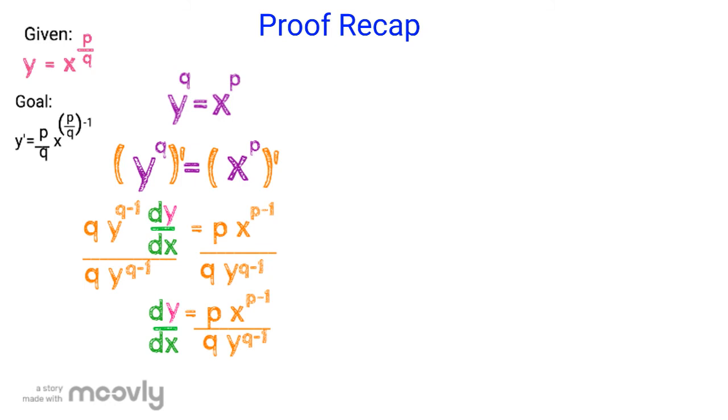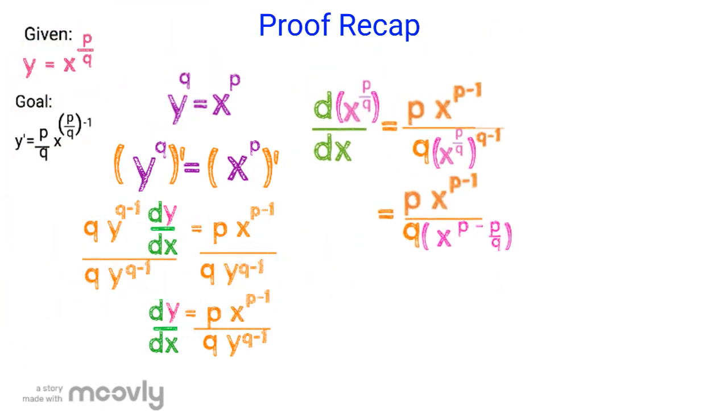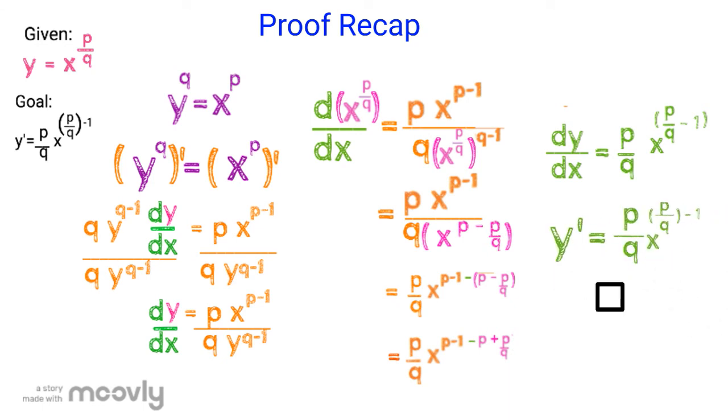So now we have dy dx equals p x to the power of p minus 1 over q y to the power of q minus 1. Then we plug in x to the power of p over q for our y values. We multiply the exponents in the denominator. We take out p over q and subtract the exponents for x values. The p's cancel out, and we end up with dy dx equals p over q x to the power of p over q minus 1, which is the same thing as y prime equals p over q x to the power of p over q minus 1.